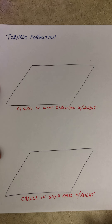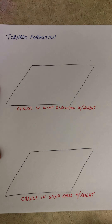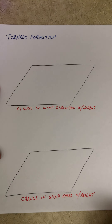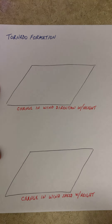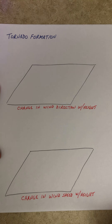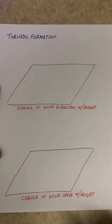What I do know is that tornado formation starts hours and hours before severe weather even starts. The initial conditions — if your thunderstorm that creates a tornado occurs in the late afternoon, those initial conditions were probably started at 9, 10, 11 o'clock in the morning. These initial conditions happen all the time; it doesn't mean that a tornado is going to form, but they are needed in order for a tornado to form.